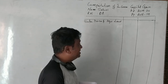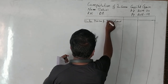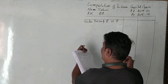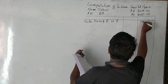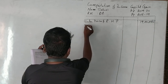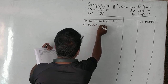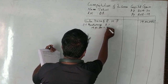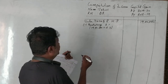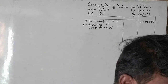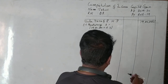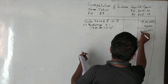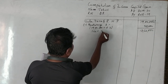The sale of the residential house property is for Rs. 19 lakhs. Brokerage paid is 2% of Rs. 19 lakhs, which comes to Rs. 38,000. So the net sale price is Rs. 18,62,000.